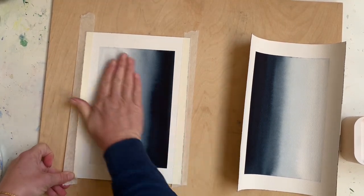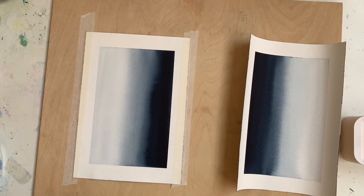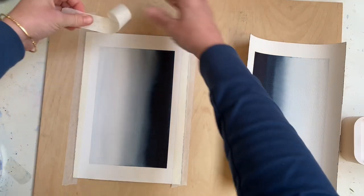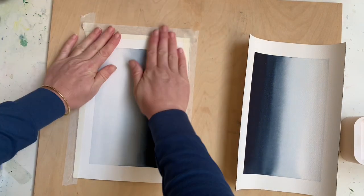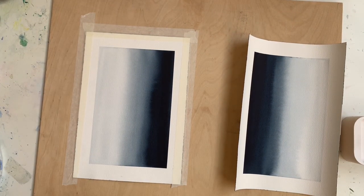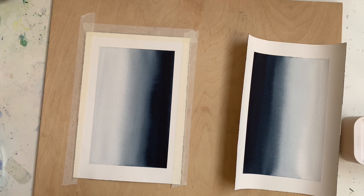As it dries it's going to contract further, and if it's really tight then it's going to help that flattening effect. I'm not rushing this because the paper's still very wet and there's no danger of it drying too quickly. I've done the other edge and I'm going to do the bottom now.